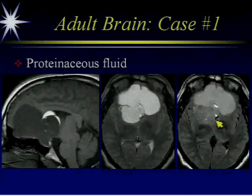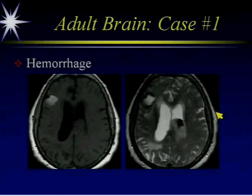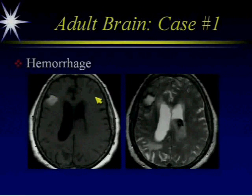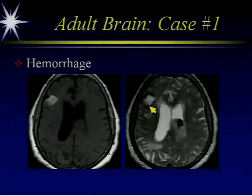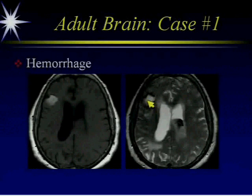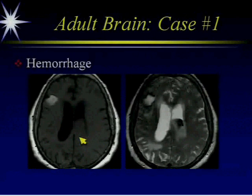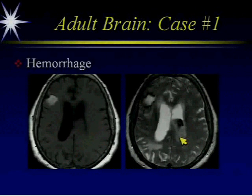Hemorrhage can also be bright on T1. This is a patient with amyloid angiopathy — we see a lobar hemorrhage here. This is a chronic hemorrhage; it's intrinsically bright on T1 and also bright on T2, which is extracellular methemoglobin, and it has the nice hemosiderin rim. This patient also has an acute component with iso to slight intensity on T2 and dark signal — that's a mixture of oxy- and deoxyhemoglobin. Melanin can also be T1 bright; here is a patient with melanoma showing bright T1 signal from the paramagnetic effect of melanin.